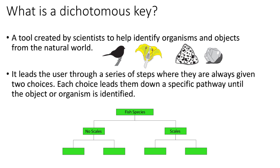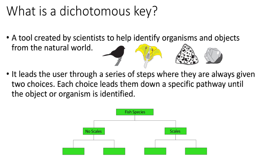It leads the user through a series of steps, and you're always given two choices. Down here you can see a very basic dichotomous key trying to identify fish species. It starts by asking: does this fish have no scales, or does it have scales? Based on how you answer, you go down a certain path. If it has scales, you might then ask: does this fish have a bony skeleton or a skeleton made of cartilage? You keep going through these series of two questions until you identify the fish species.